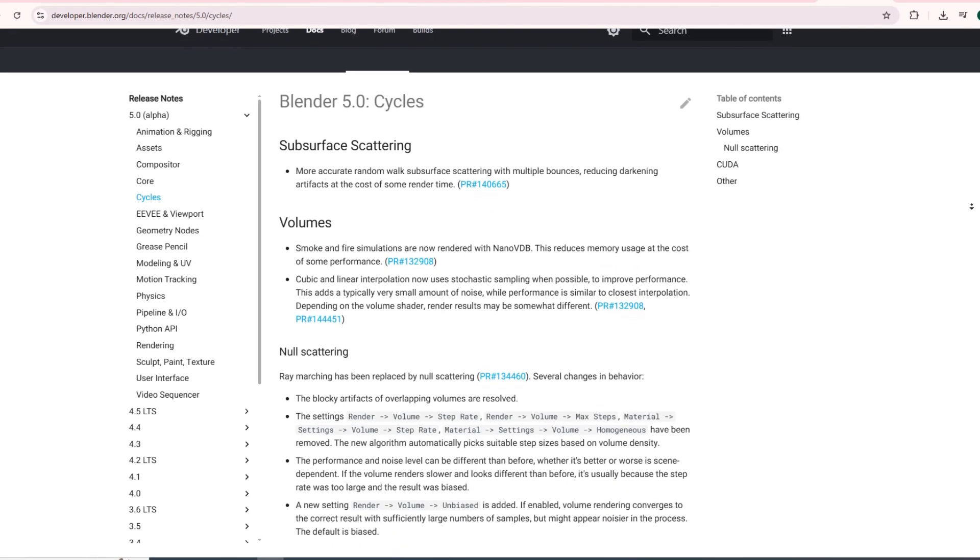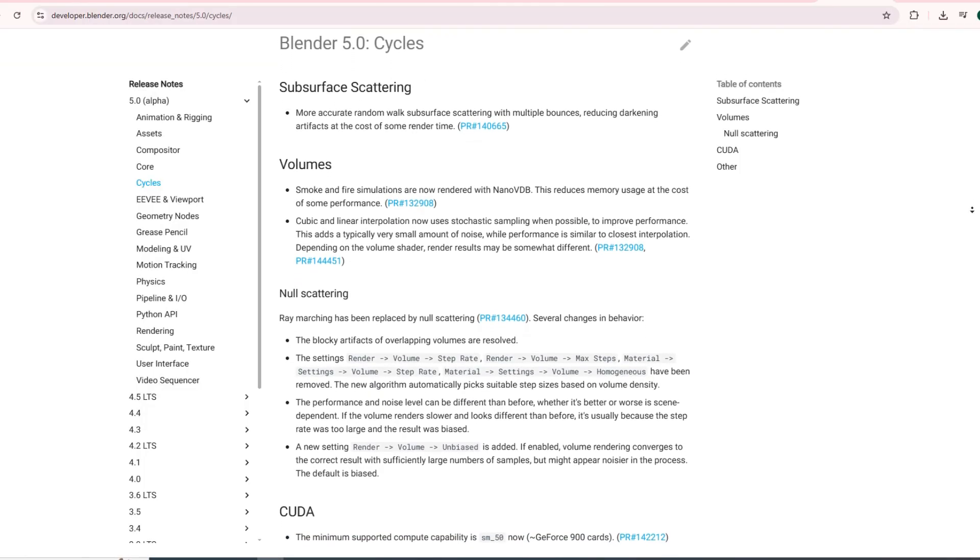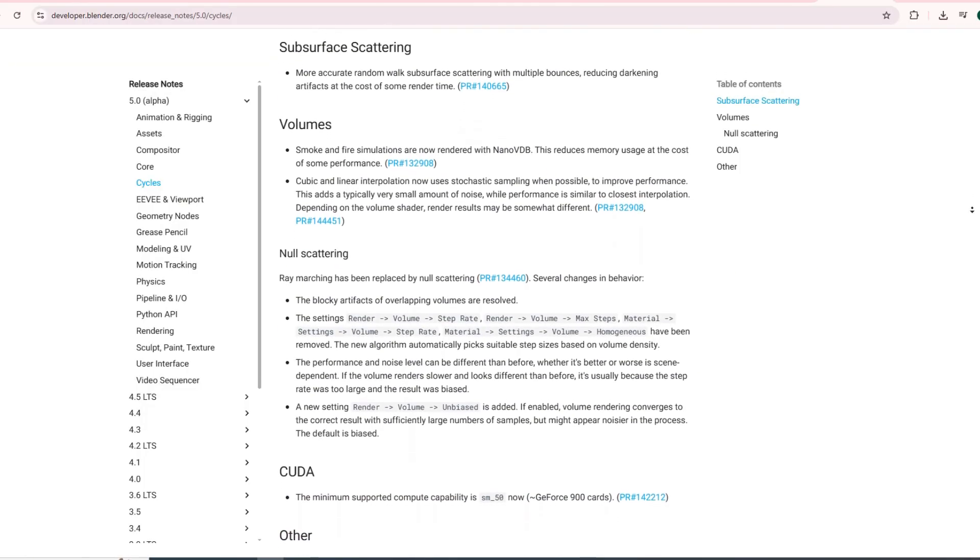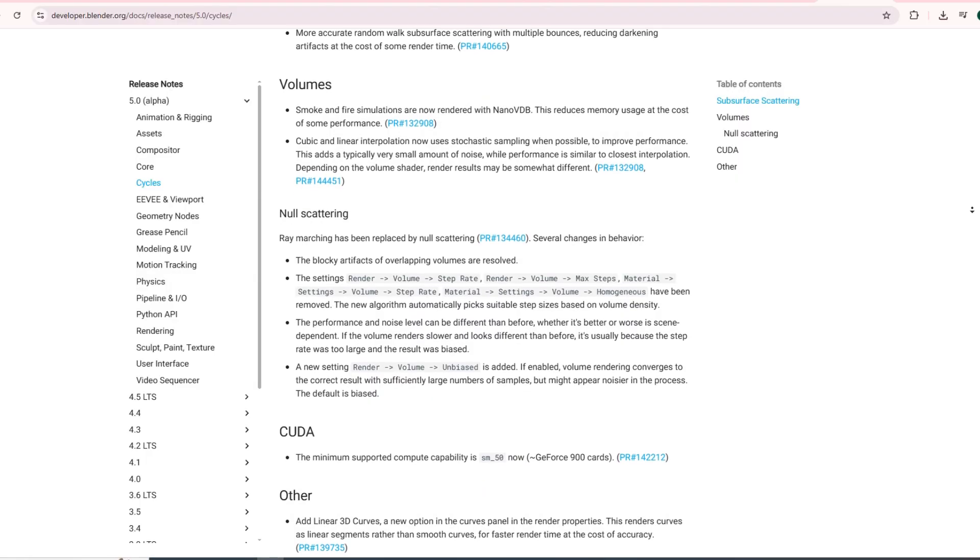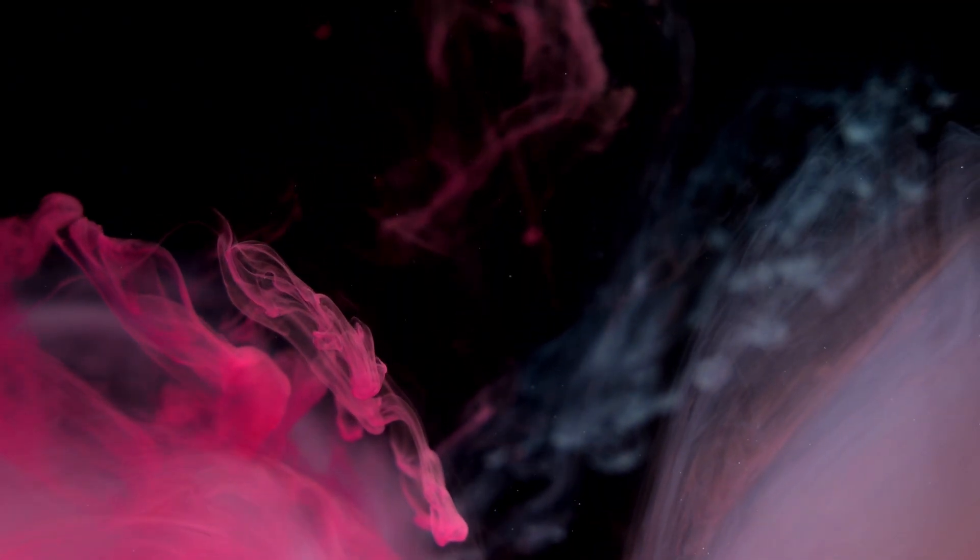Friends, in Blender 5.0, not only features in the user interface have been improved, but the rendering system has also become more powerful and realistic. Here's what's new. Subsurface Scattering SSS is now more realistic than ever. This means light interaction on skin, plastics, and other semi-transparent materials looks much smoother and natural.